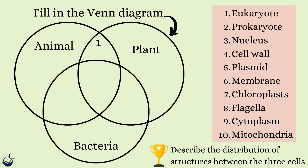Now for something with a little less words but still practising the skill of comparison between cells — copy and complete the Venn diagram, which is a set of circles that helps us display what features might be in common between the cells. There is no need to write the full words, just write the numbers as listed in the box. An example has been started for you showing number 1 in the segment that overlaps animal and plant cells — meaning both are eukaryotes. Number 2, prokaryote, would go in the segment specific to bacteria. Pause the video and try numbers 3 to 10.